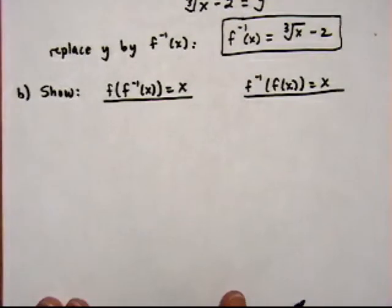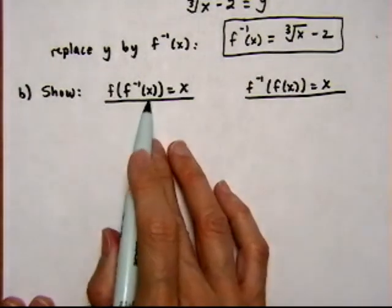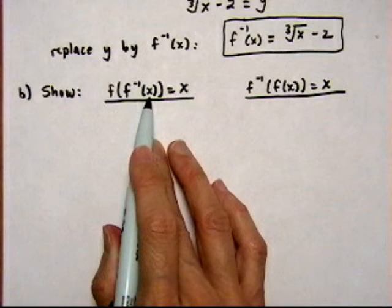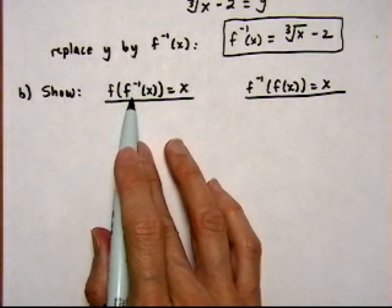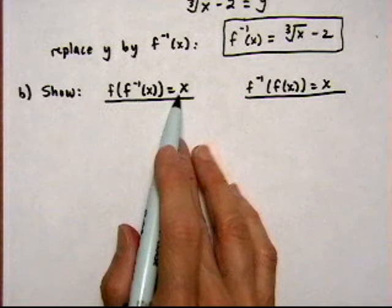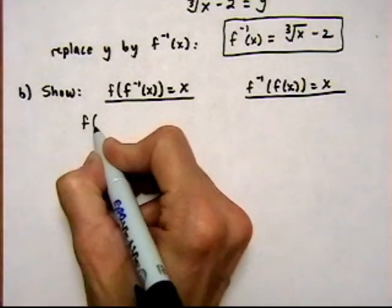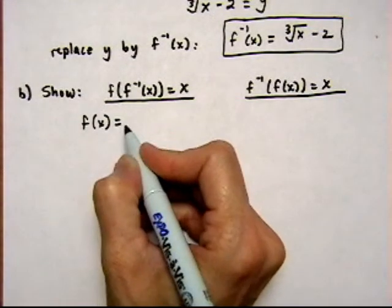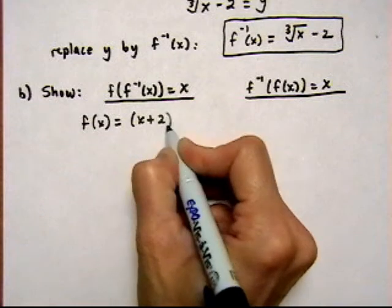And let's just verify that we did it correctly by making sure when we put x into one and then use that as the input for the other one, we get x back out again. Inverse functions undo each other. We start with f(x) is equal to x plus 2 cubed.